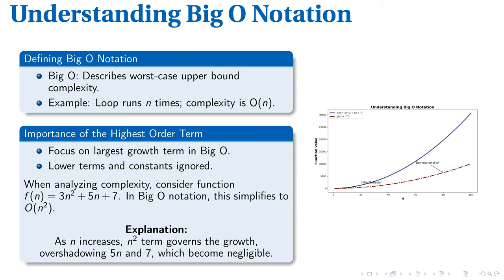Why? As N increases, the N² term dominates, rendering the 5N and 7 terms insignificant. This underlines the value of concentrating on the term with the highest growth rate — the crux of Big O notation. Armed with this understanding, we're now ahead in the efficiency analysis of algorithm performance.